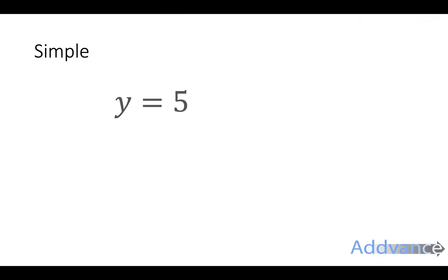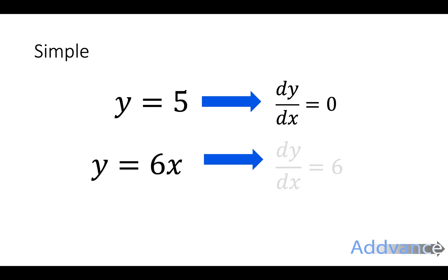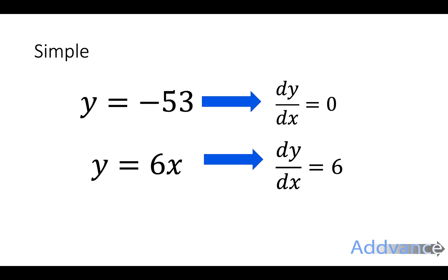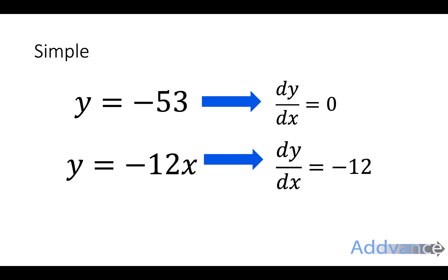The simpler case is when you have a number. If it's just a number, it differentiates to zero. And if it's a number times x, it differentiates to that number. So y equals 5 differentiates to zero, y equals 6x differentiates to 6, y equals 9 differentiates to zero, y equals minus 53 differentiates to zero, y equals 8x differentiates to 8, and y equals minus 12x differentiates to minus 12.